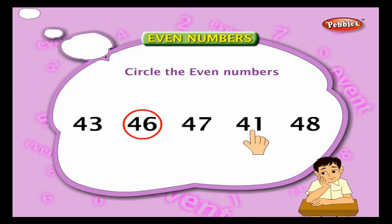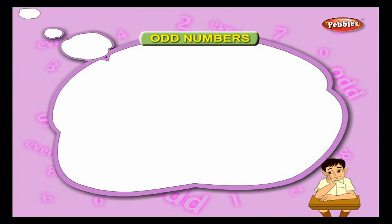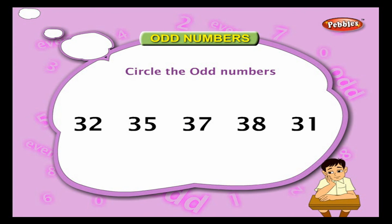48 ends with eight, so it is an even number — circle it. Odd numbers: numbers ending with one, three, five, seven, and nine are called odd numbers. Let us now circle the odd numbers in the given five numbers.